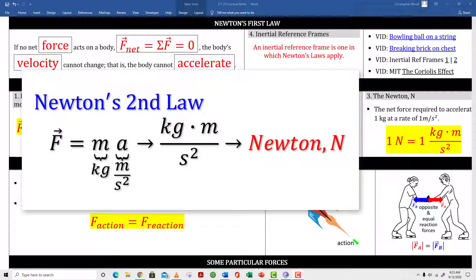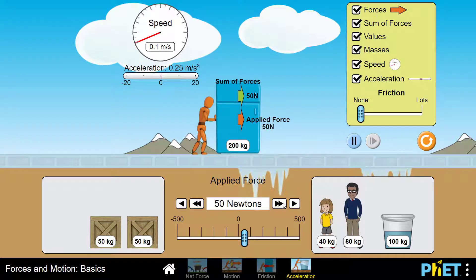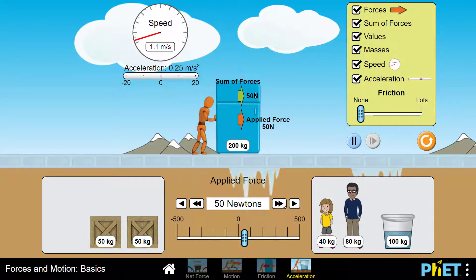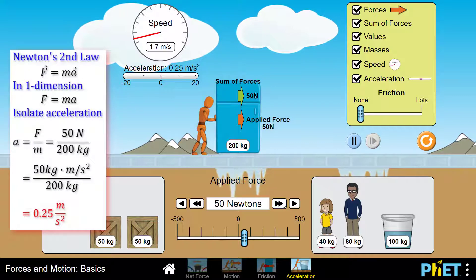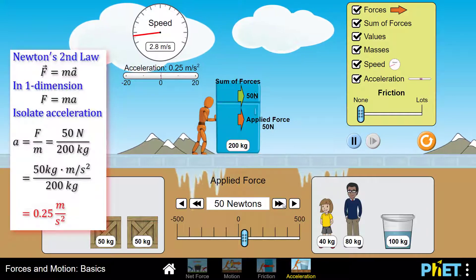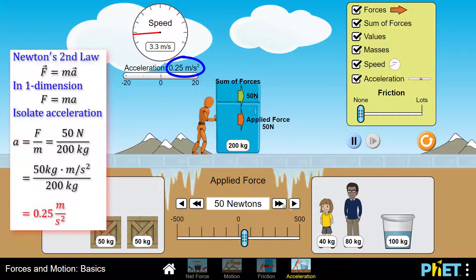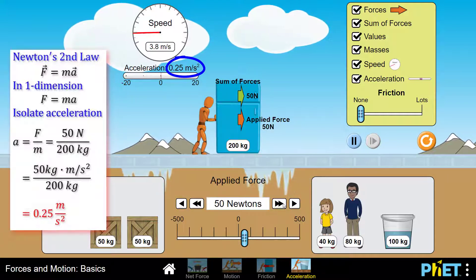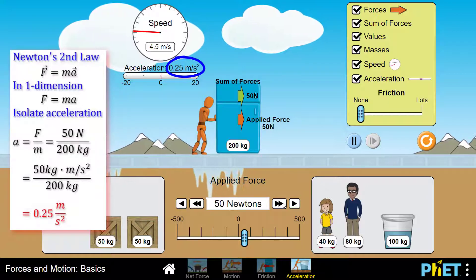Box number three introduces the Newton. If you do the dimensional analysis on F equals ma, you see that force is expressed as a kilogram meter per second squared, which is known as the Newton. Here's an example. A 50-Newton force is applied to a 200-kilogram refrigerator. I'll start with F equals ma and rearrange to isolate acceleration. So 50 Newtons divided by 200 kilograms equals 0.25 meters per second squared.